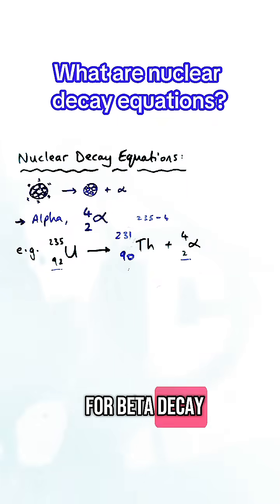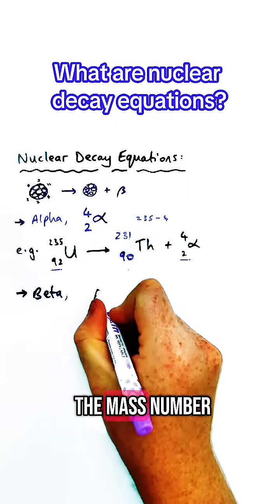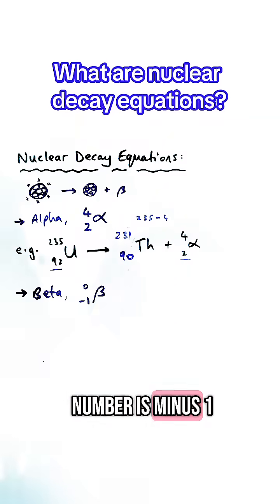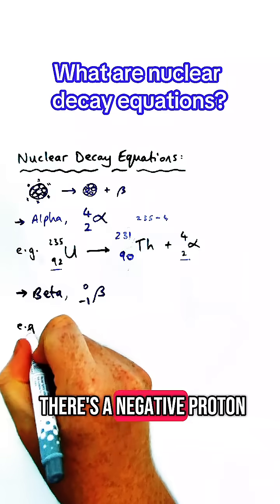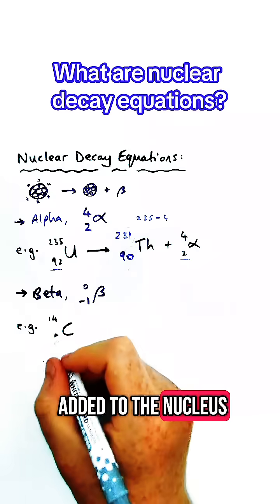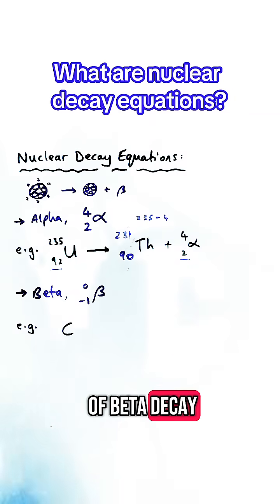For beta decay, this is slightly trickier. The mass number of a beta particle is 0, and the atomic number is minus 1. That's not because there's a negative proton, but it's because there's actually a proton that becomes added to the nucleus in the process of beta decay.